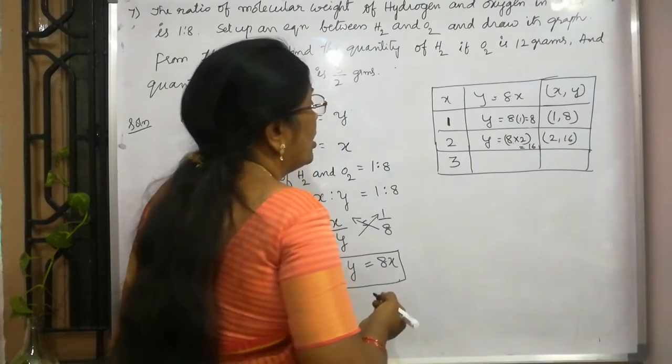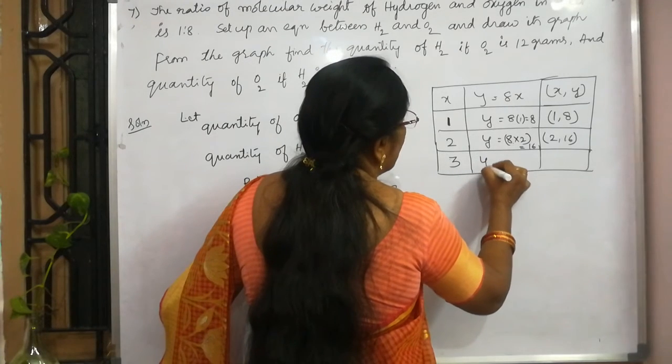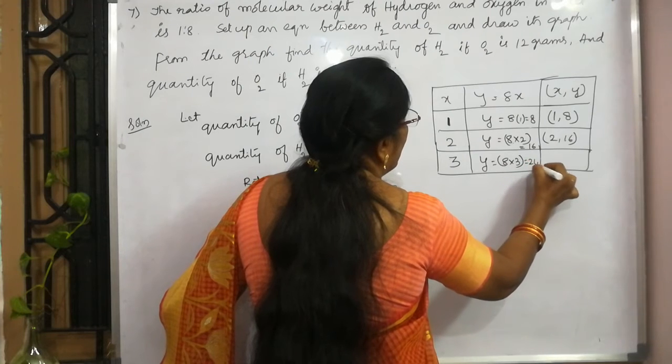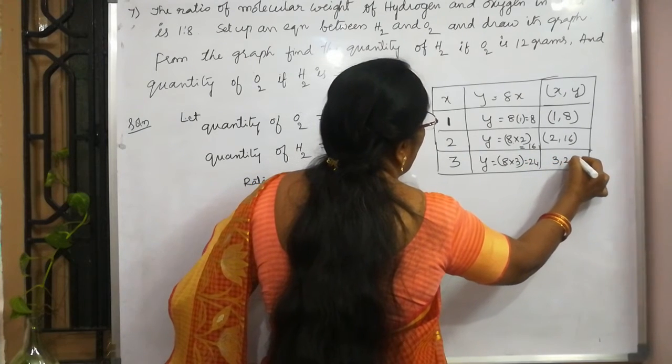If you put 3 in x, y is equal to 8 into 3. That is 24. So, this is 3 comma 24.